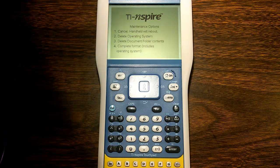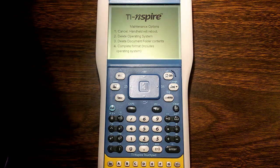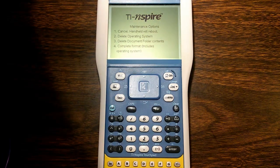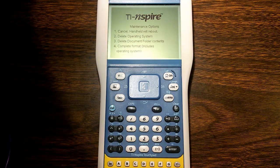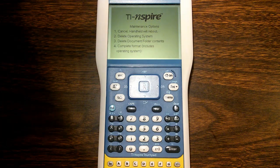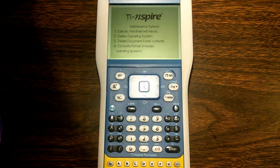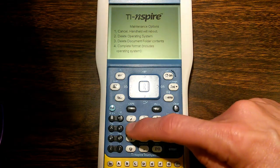Number two, delete the entire operating system. Number four, complete format. In the case of this calculator, I already tried number two and it didn't work. So this time we're going for four, which is the nuclear option. We're going to completely format including the operating system. We're going to press four.